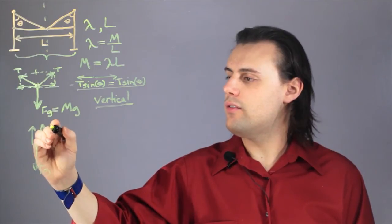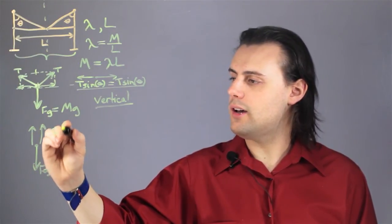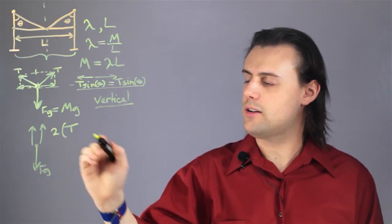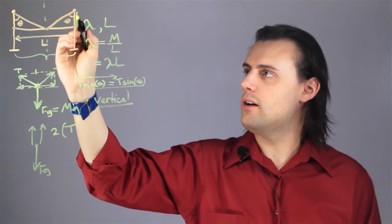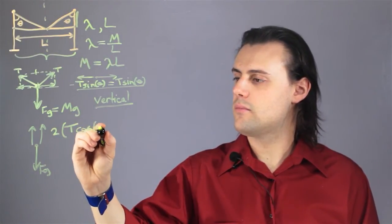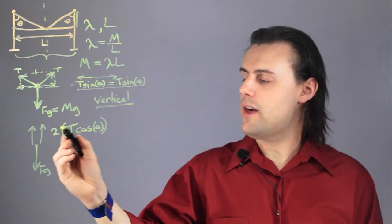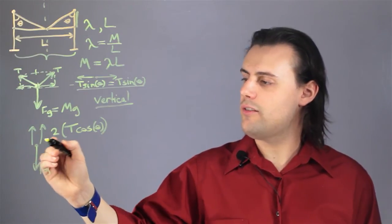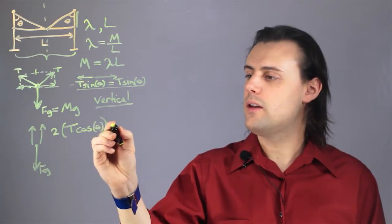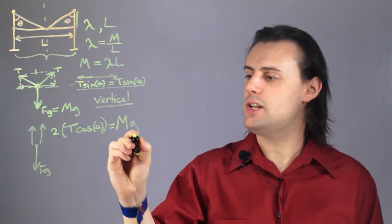So I have 2 times the original tension vector magnitude times cosine of the angle theta. And I know that these two vectors have to be equal in magnitude to the force of gravity, which is going to be equal to m times g.